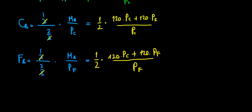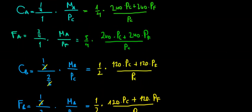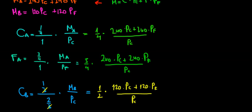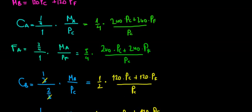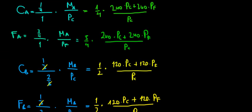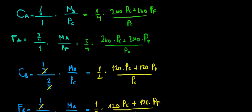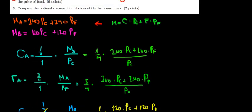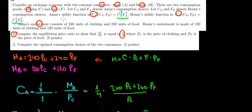Now we have everything — the consumption of all goods by both consumers — and we need to find the price ratio. To do that, we keep in mind that equations with the same denominator can be set equal to total endowments. We have 240 units of clothing and 240 units of food for Anna, and the same for Benny. In the next video, we'll use these endowment equations to find the price ratio.